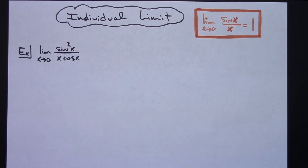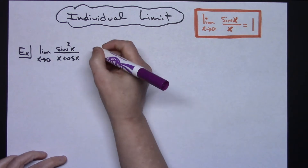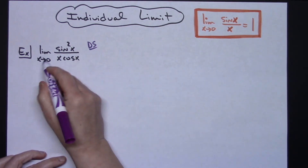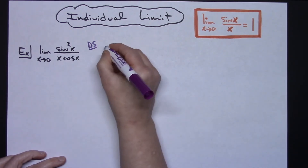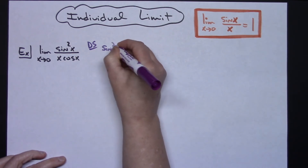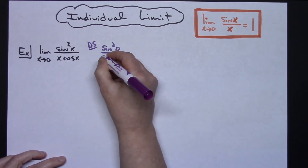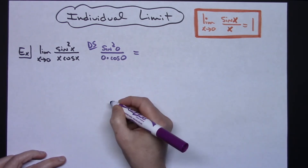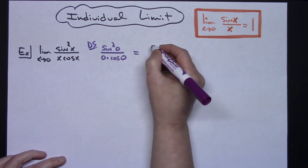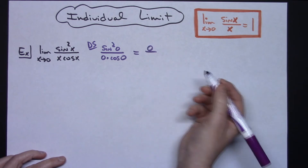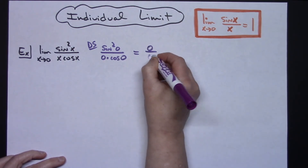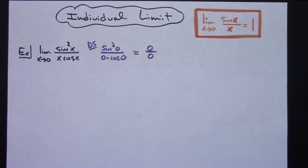As with any limit problem, the very first thing you should do is a direct substitution to see what you have going on in the problem. So as I plug 0 in, I'm going to have sine squared of 0 all over 0 times cosine 0. Sine of 0 is 0, sine of 0 squared is 0, and 0 times cosine of 0 is again going to be 0. So we do have that indeterminate form going on with this.